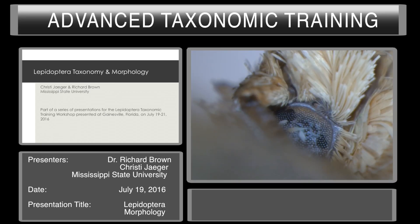The chaetosemata is present or absent but if present, reduced in Geometroids and the same for the Pyraloids. But it's present throughout the Microleps. This chaetosemata is distinctive of the family Tortricidae. This moth has erect palpi. So what's the family? Tortricidae. Here you see the chaetosemata which are present in tortricids but not present in many other Lepidoptera.